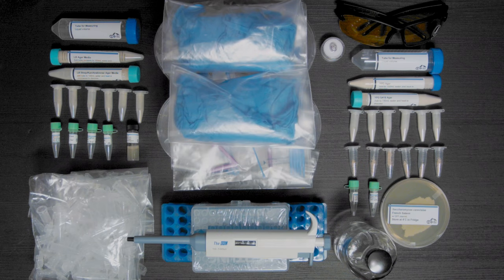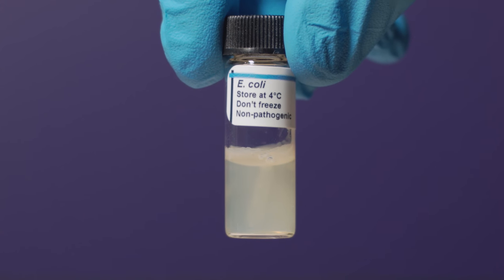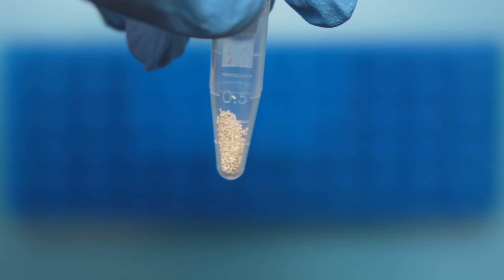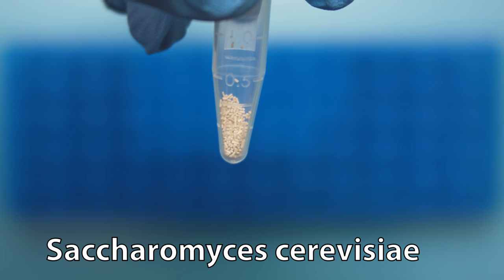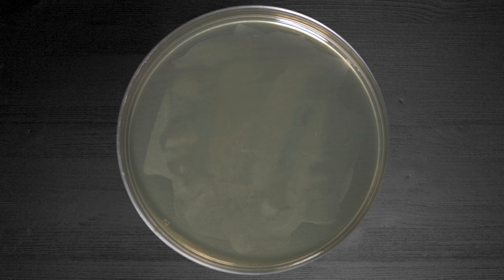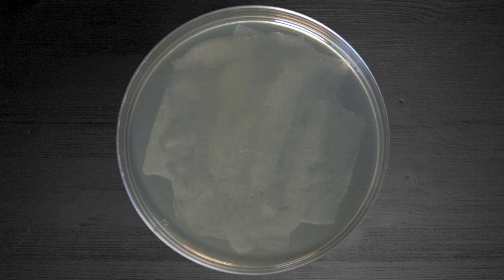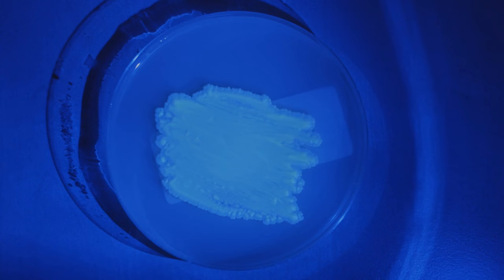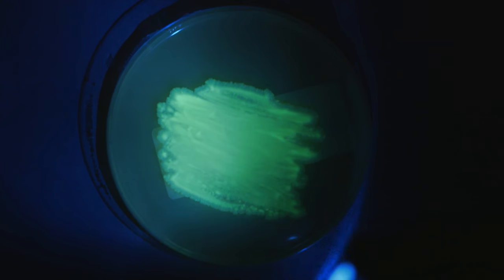For this CRISPR experiment, a non-pathogenic strain of E. coli is used, and baker's yeast, or Saccharomyces cerevisiae, is used in the other. The goal of the yeast experiment is to get the cells to produce a green fluorescent protein, or GFP for short, so that it glows in the dark under blue or UV light.